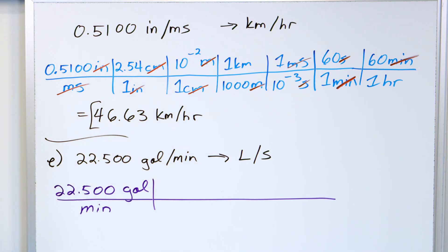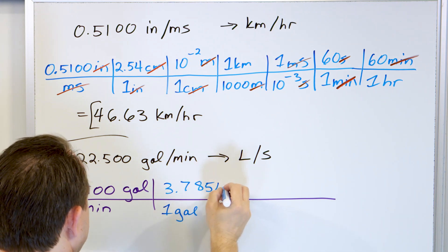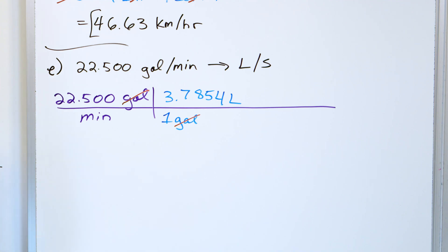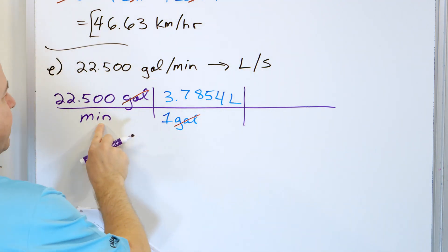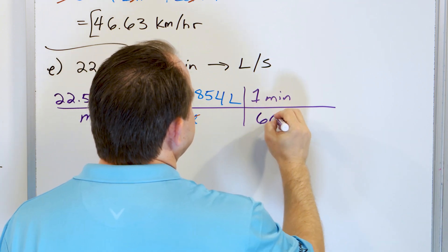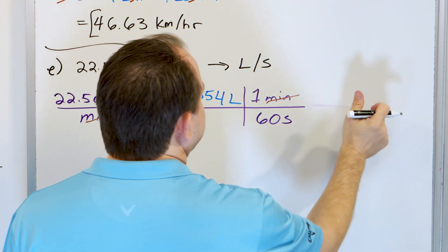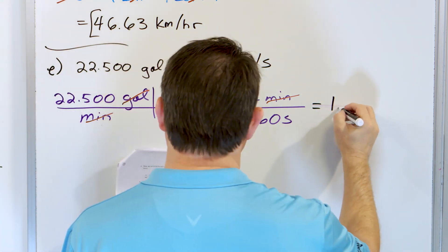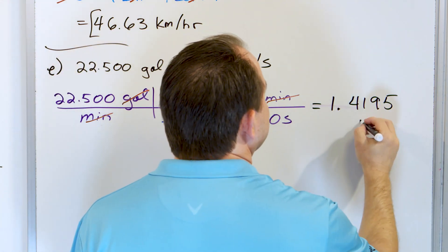We work on the gallons first. One gallon is 3.7854 liters, arranged so gallons cancels. That gives liters per minute, but I want liters per second. I know that in one minute there are exactly 60 seconds, and minutes cancels with minutes. So: 22.500 times 3.7854 divided by 60 gives 1.4195, and the units left over are liters per second.